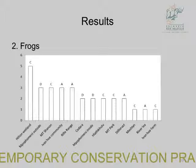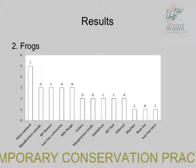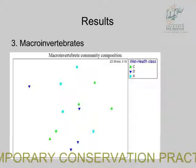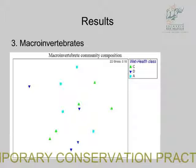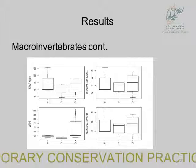For frogs, I had problems because I used my cell phone to record them — the proper instrument is expensive. There were difficulties in identifying some species due to ambient noise recorded by the cell phone. For macroinvertebrates, there was really no clear difference between the WET-Health classes, and the SASS scores between wetlands were not significantly different.